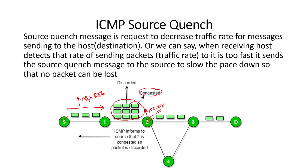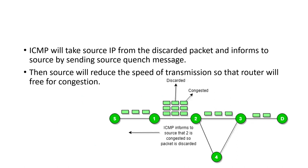When packets create congestion, the network has to discard some packets, saying it cannot take more data because the receiver is not able to process it. Whenever the router is going to discard a packet, it will inform the sender by sending an ICMP packet saying there is network congestion because your sending rate is very high — please slow down your pace or stop sending the message.